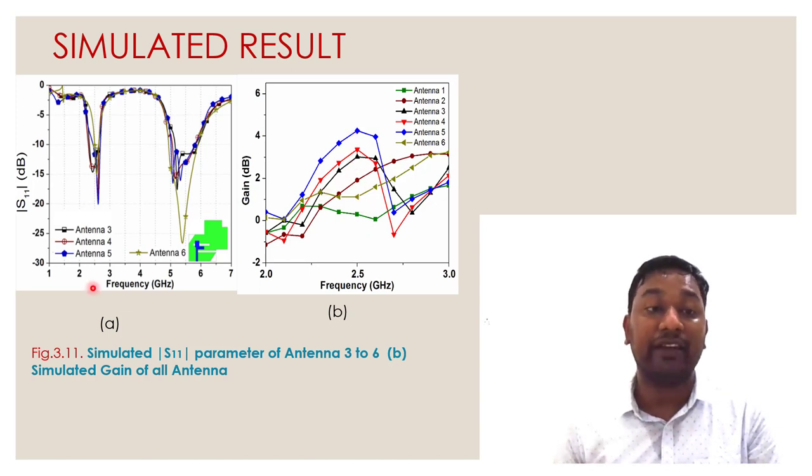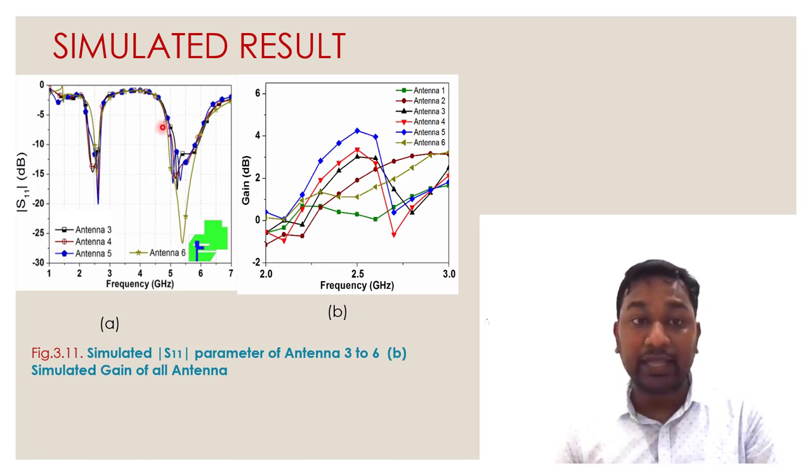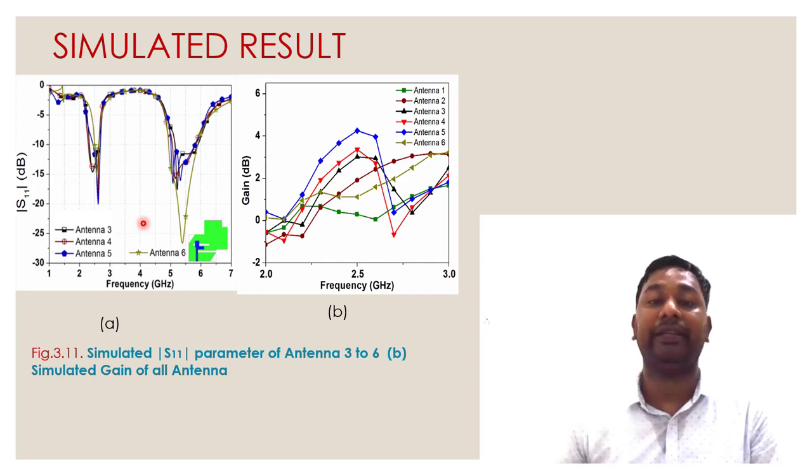In reflection parameter we have seen the things are same. In both frequencies the antenna is working properly. So metamaterial are used to enhance the gain only, not affect the other performance of the antenna.